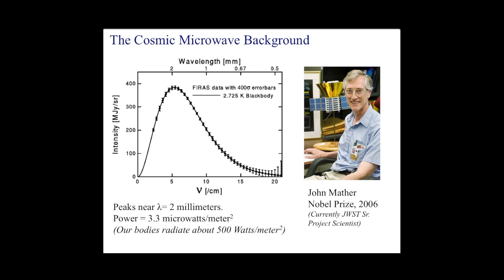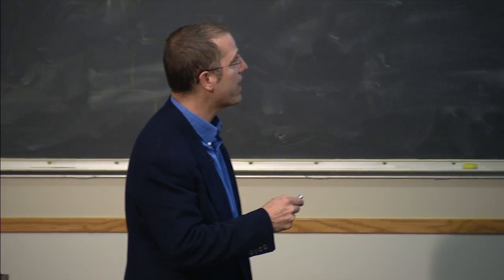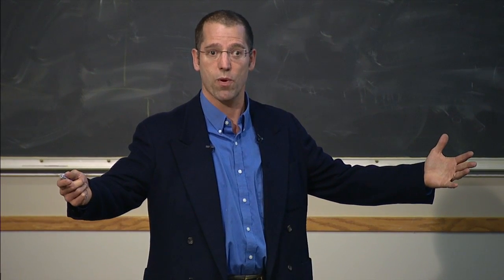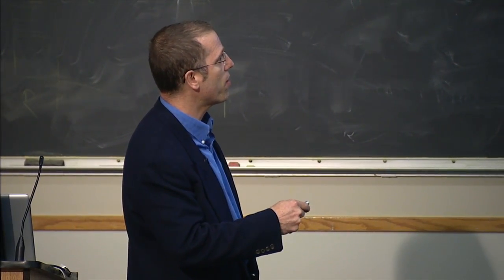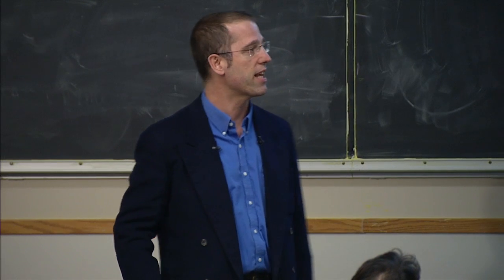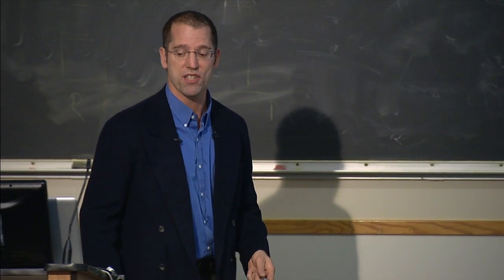The power in this black body — if you went out into space and asked how much power is hitting a square meter — is about 3.3 microwatts per square meter. That's really, really small. We right now are radiating about 500 watts per square meter each, so our thermal radiation is just blowing this out of the water. It has really no impact on the Earth in terms of heating anything up, and it makes it very hard to measure because it's so weak.